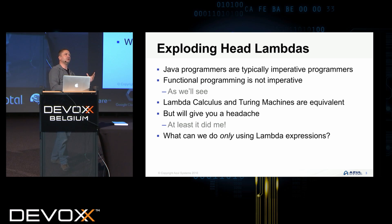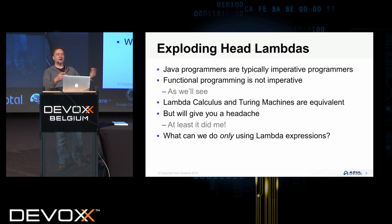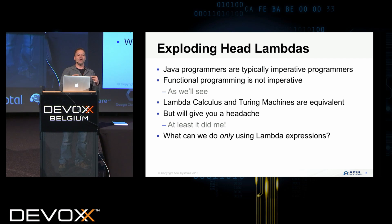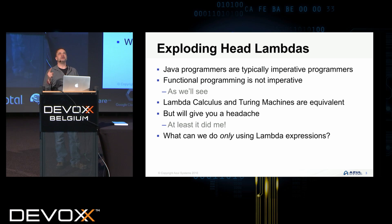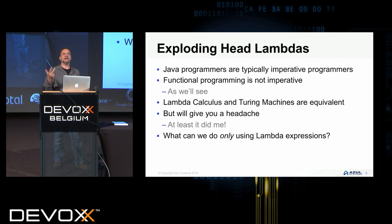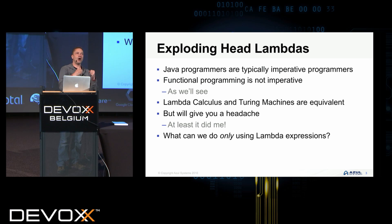Alonzo Church was actually the supervisor for Alan Turing, so there's another connection there. But when you get into using these things in a more complex way, it certainly gives me a headache. The idea of this is: what can we do in Java only using Lambda expressions? We're not allowed to use any primitives, any types, any operators. How can we replicate what's possible in Java only using Lambda expressions?